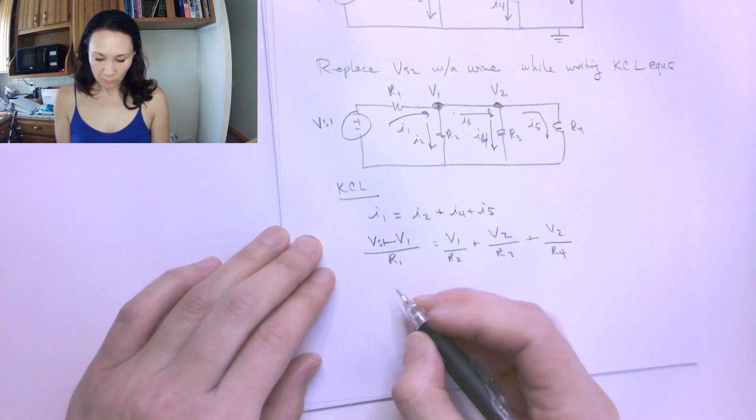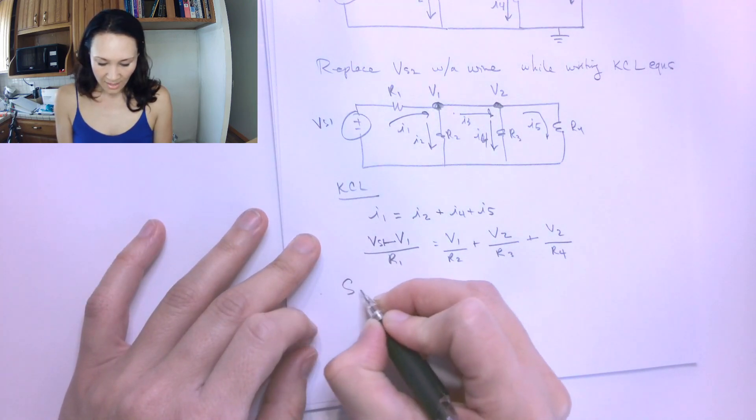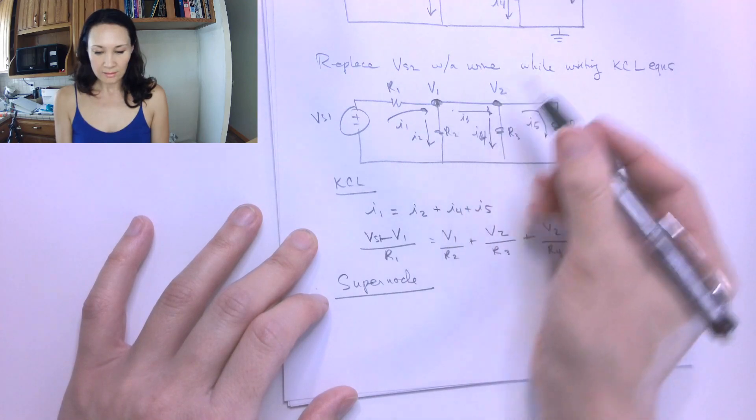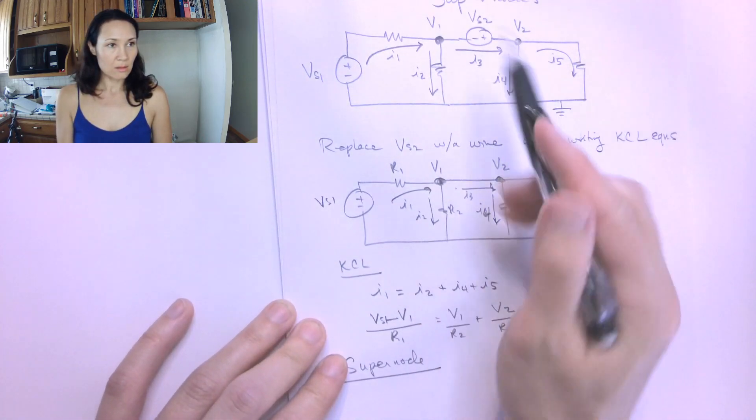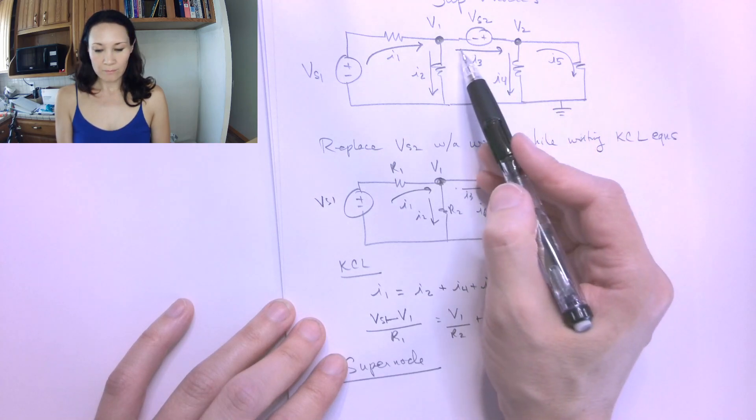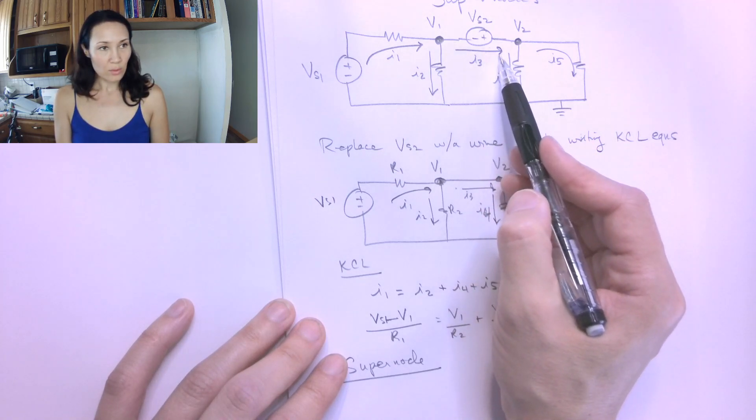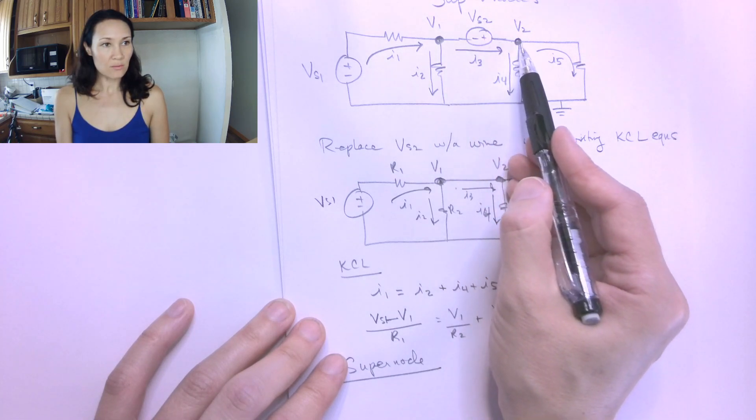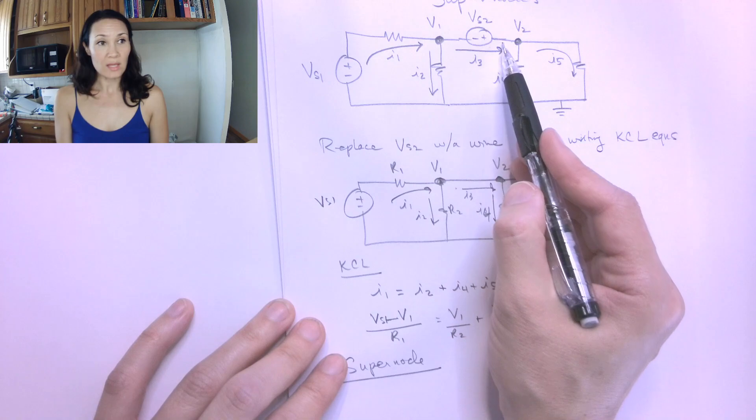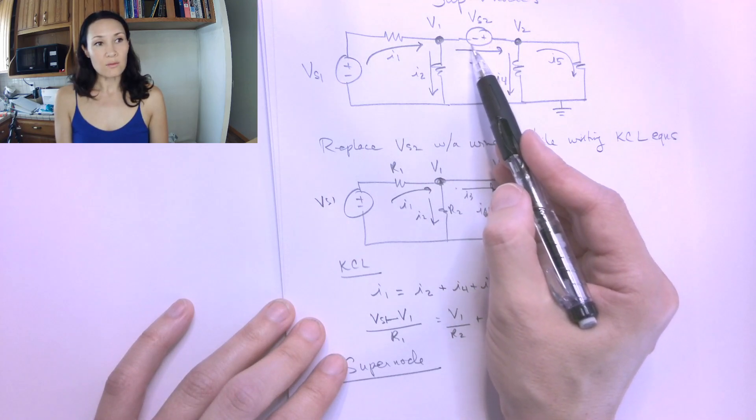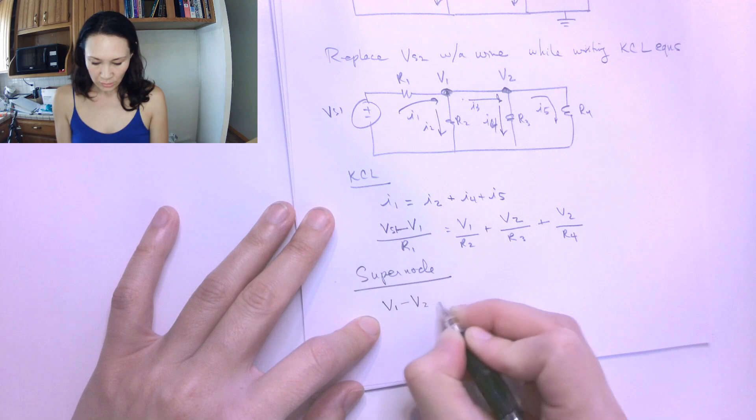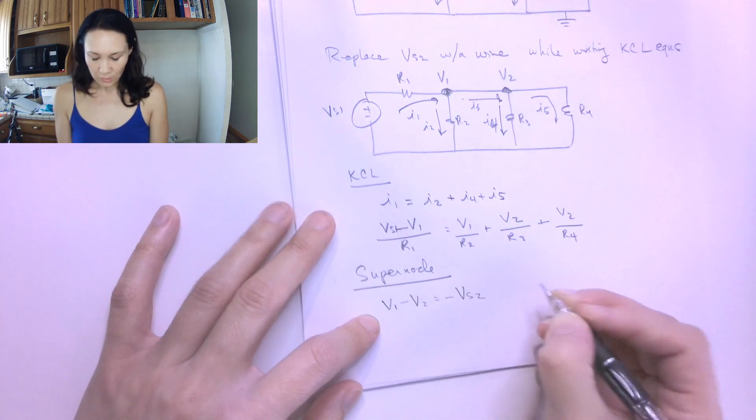Now we're going to come up with this at the super node. At the super node, we have that the difference between these two nodes is going to be the value of this voltage source here. So just to keep with my convention of following the direction of my current, I'm going to have that V1 minus V2 is going to be negative VS2. And it's negative because as the current travels this way, it's entering this source through the negative terminal of this power source here. So at the super node, I have that V1 minus V2 is equal to negative VS2.